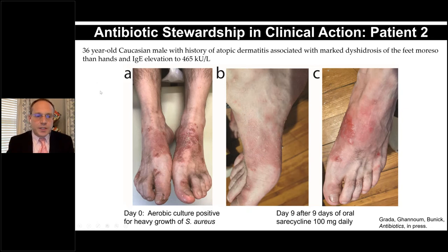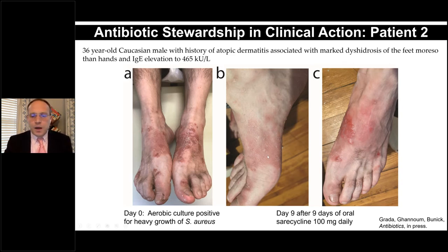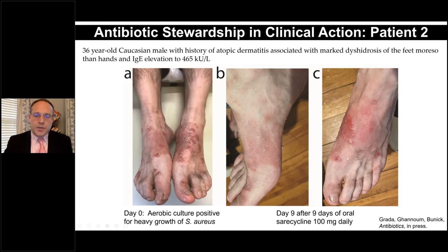Patient two is a 36-year-old Caucasian male with atopic dermatitis associated with marked dyshidrosis of the feet and an IgE elevation at 465. His feet showed red crusted lesions, and the aerobic culture was positive for heavy growth of staph aureus — consistent with impetiginized atopic dermatitis, dyshidrotic subtype. After nine days of oral saracycline 100 mg daily, there was significant reduction in the staph aureus infection and inflammation on his foot.